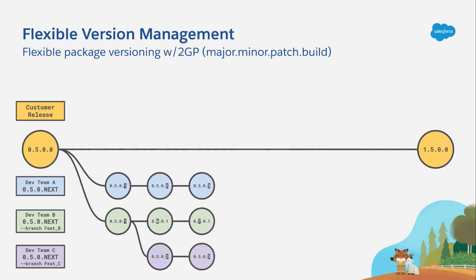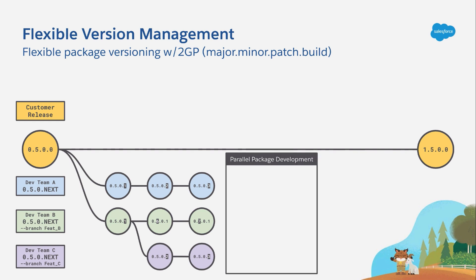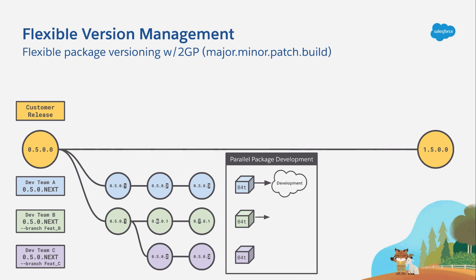It's worth stopping for a moment to consider what's happened here. Three different teams, all working from a similar ancestor, have been able to work independently in parallel to create installable package versions. This is a critical point because they're not just putting raw unpackaged metadata into DE or trial orgs — these installable package versions can be used as dependencies for other packages in development, distributed to customers in search of feedback, and even used to test integrations.